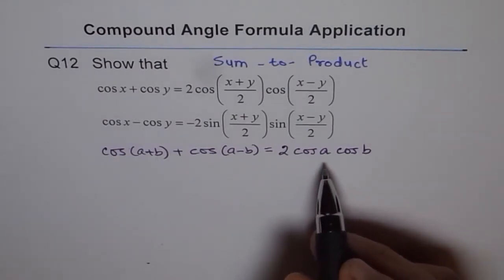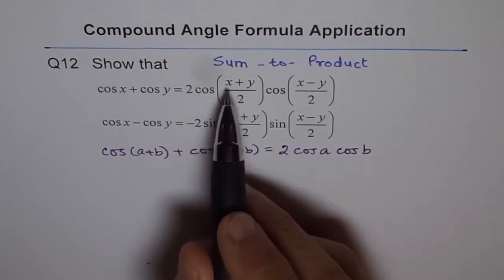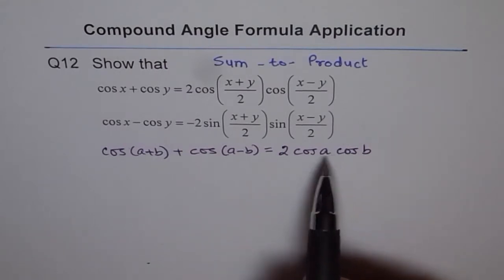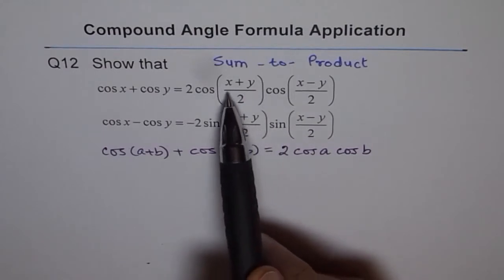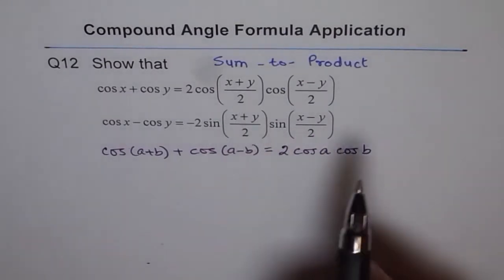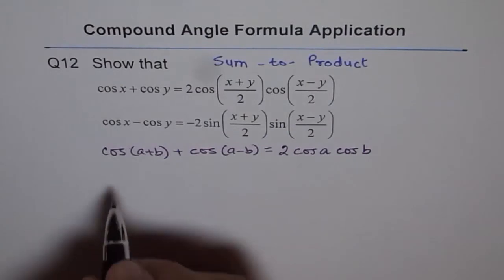And then, here what we do is, we do a small substitution. And the substitution is, let a equals to x plus y by 2. You see, this is already in the product form. The only thing it is missing is the term inside, the angle, which is x plus y over 2. So let's substitute a as x plus y by 2 and b as x minus y by 2.